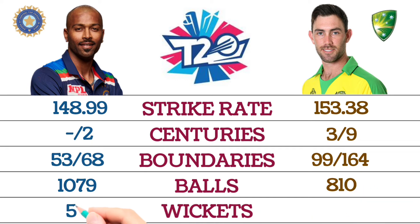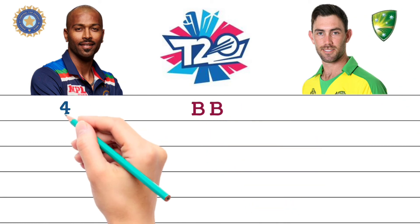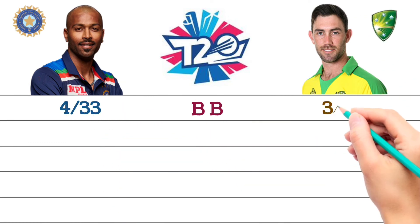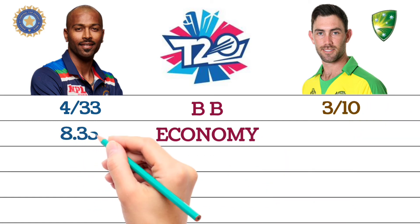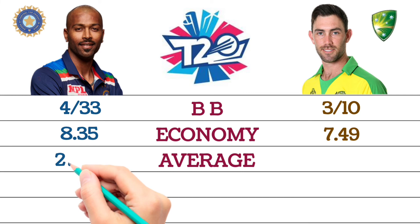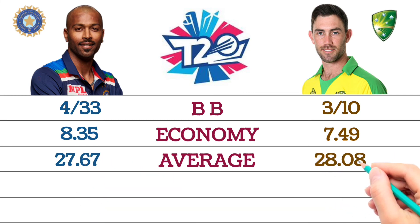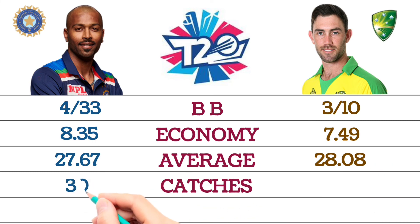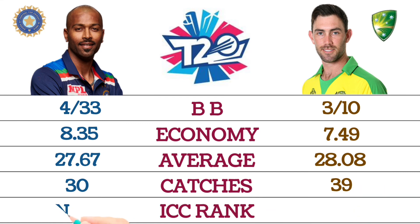Total wickets: Hardik Pandya took 54 wickets; Glenn Maxwell took 36 wickets. Best bowling: Hardik Pandya 4 for 33; Glenn Maxwell 3 for 10. Economy: Hardik Pandya 8.35; Glenn Maxwell 7.49. Bowling average: Hardik Pandya 27.67; Glenn Maxwell 28.08. Catches: Hardik Pandya 30; Glenn Maxwell 39. ICC rank: Hardik Pandya number 7; Glenn Maxwell number 5.